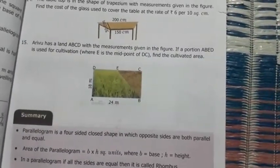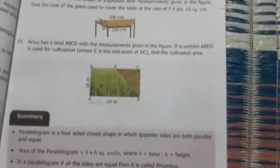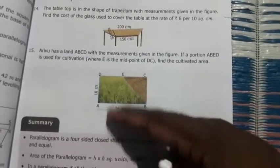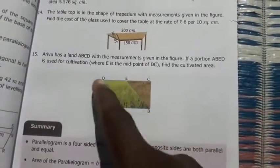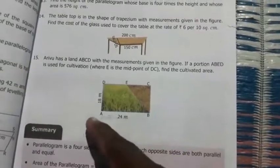What is that area of trapezium? Half into H into A plus B. Sum of the parallel sides. H means what is that? The distance between the parallel line. AB and DE is given as 18. Parallel side AB is given 24. DE, what is that? DE is not given. So how to find?